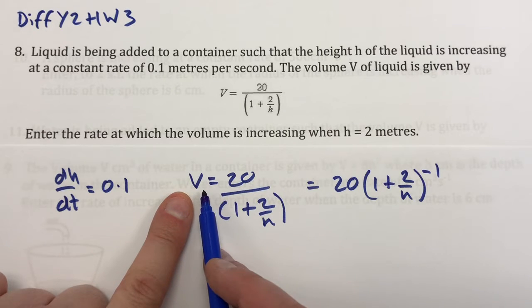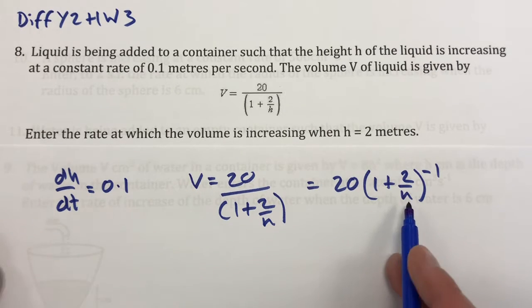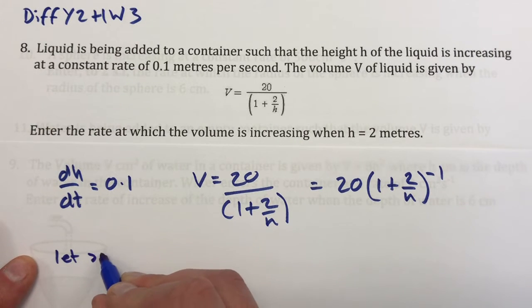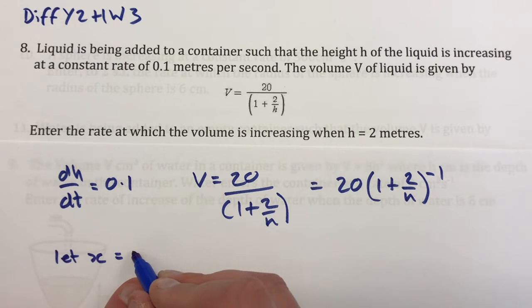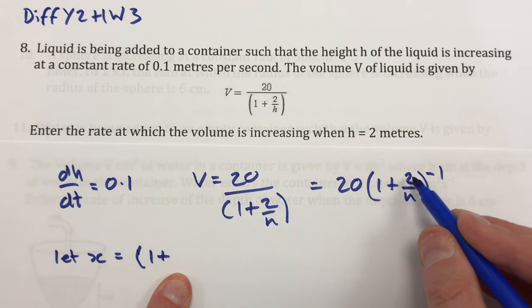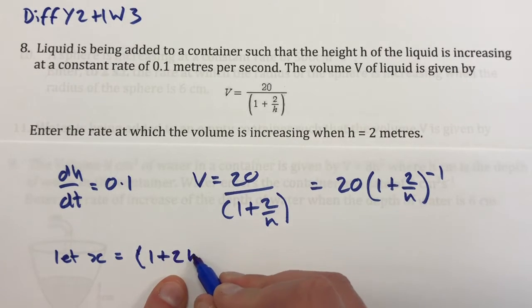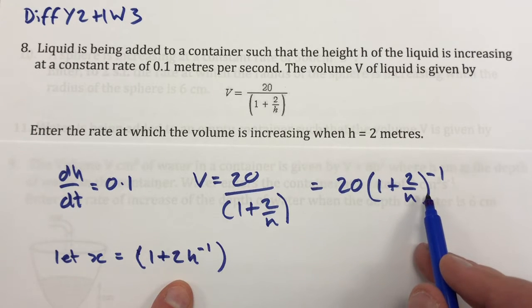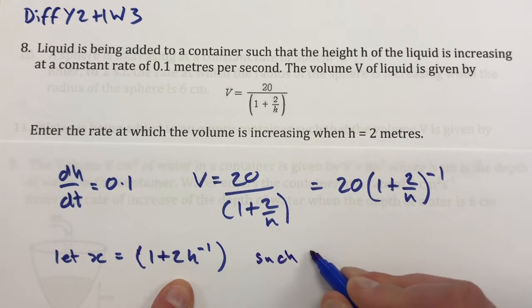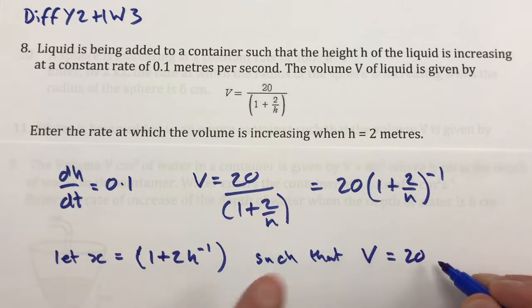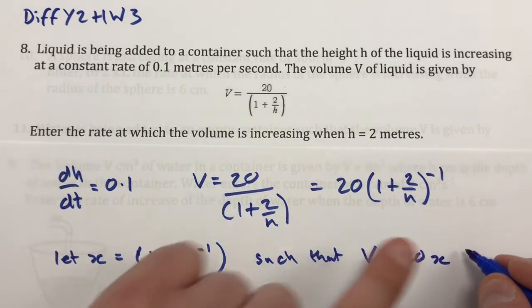So if I begin by letting, say x, we'll use x to be equal to, and I'll open a bracket, put 1 plus, and we want to express this as 2h to the minus 1. So 1 plus 2h to the minus 1, so that's the inside of that bracket effectively. And we're doing that such that we can then put V equals 20x to the minus 1.